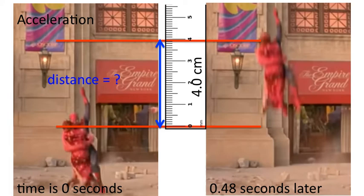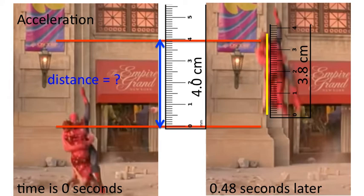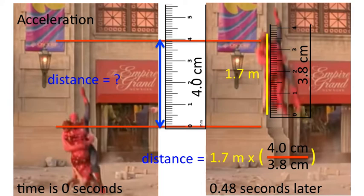But the problem is, we need to convert that four centimeters into a real-life distance. So we need a scale. We're going to use the actress's height as the scale. Using a ruler, the actress's height on the screen is 3.8 centimeters. According to the internet, her actual height in real life is 1.7 meters. So distance is equal to 1.7 meters times 4 centimeters over 3.8 centimeters, and the distance is 1.79 meters.